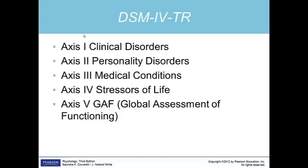Axis 2 covers developmental and personality disorders and mental retardation. Axis 3 covers medical conditions such as diabetes or the flu. Axis 4 covers stressors of life such as school or housing problems or the death of a spouse. Axis 5 is the Global Assessment of Functioning Scale, or GAF, where the client is rated on psychological, social, and occupational functioning on a scale of 1 to 100. All axes are used for each client.